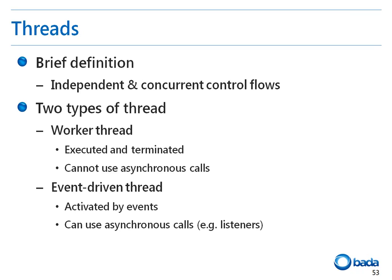In general, while a worker thread is created to perform relatively long operations in parallel with the main thread, an event-driven thread is created to handle events independent of the main thread. Therefore, an event-driven thread can be implemented using an asynchronous call, but a worker thread cannot use an asynchronous call.